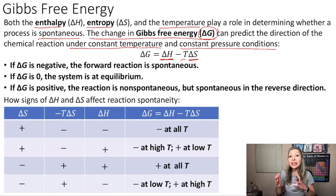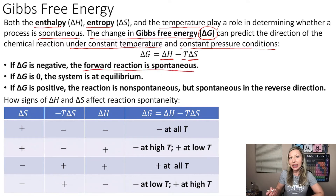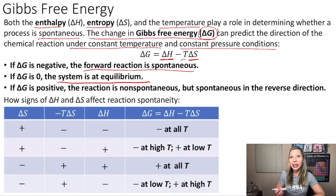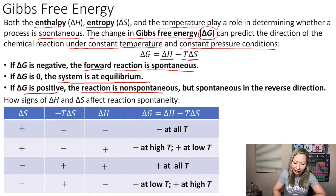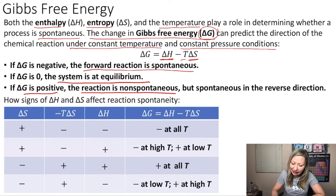If ΔG is negative, that means the forward reaction is spontaneous. If ΔG equals zero, then the system is going to be at equilibrium. If ΔG is positive, then the reaction is non-spontaneous in the forward direction, but it is spontaneous in the reverse direction.